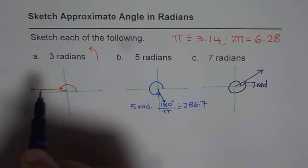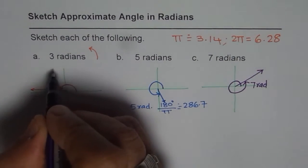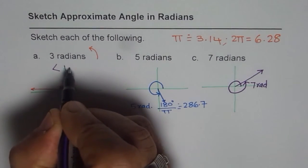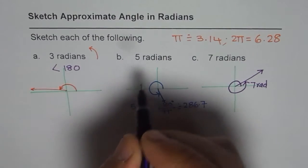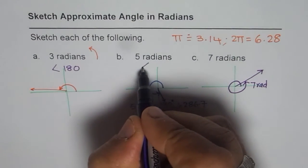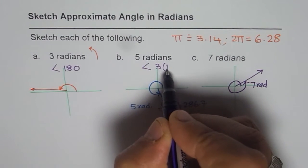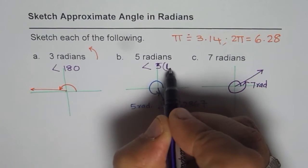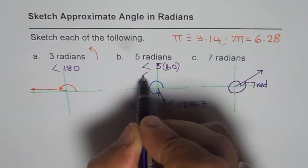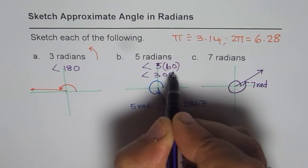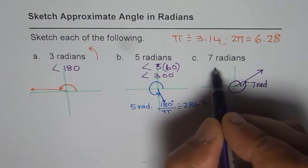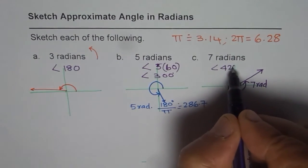So 3 times 60 is 180. So it is less than 180 degrees and 5 radians is less than 5 times 60. That means it is less than 300 degrees, right. And 7 radians is less than 420 degrees.